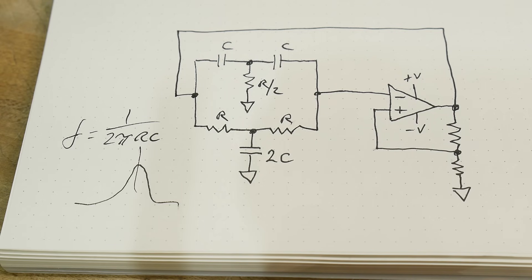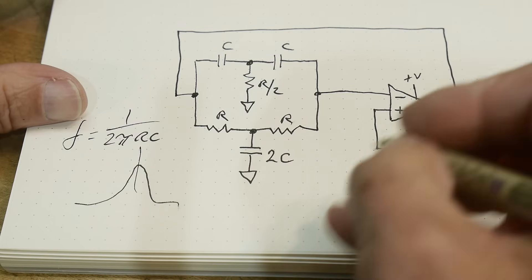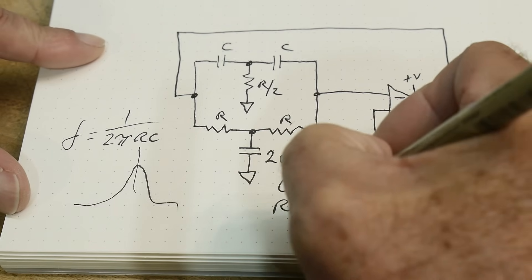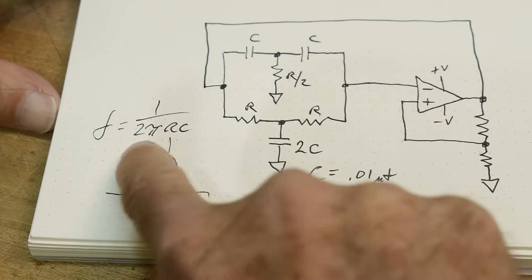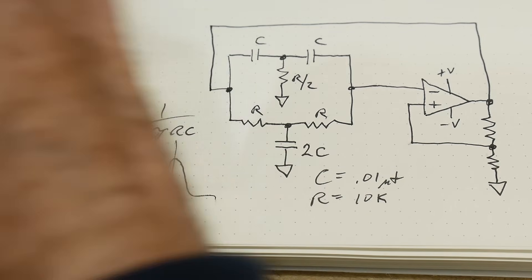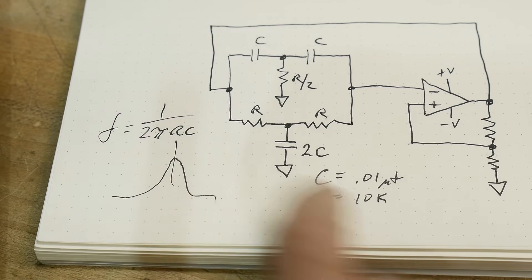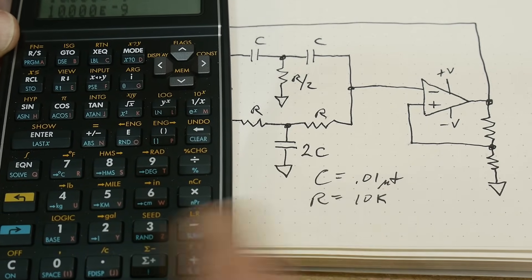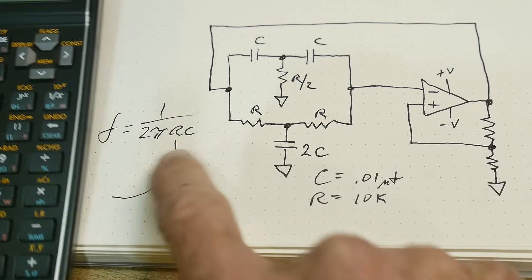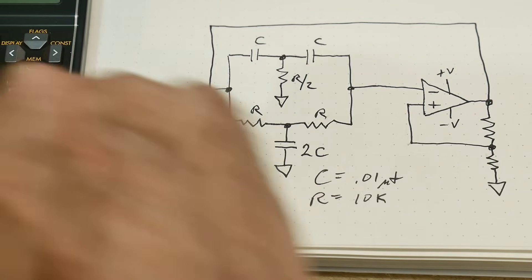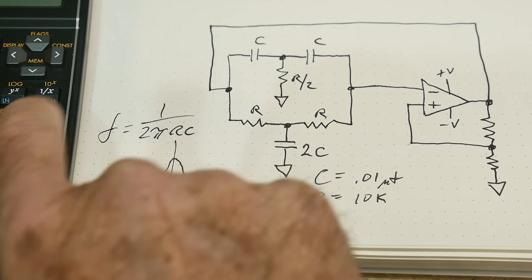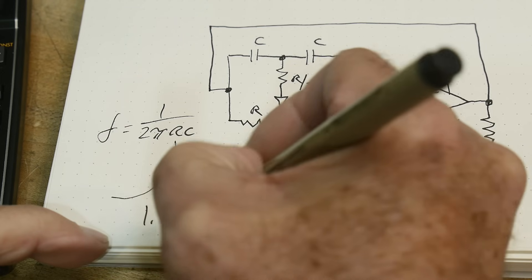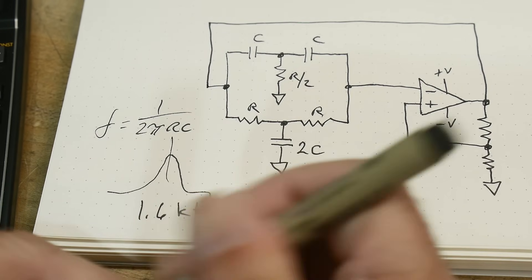All right, so what value should we use? We should use my favorite values. So C is going to be equal to 0.01 microfarads and R is going to be equal to 10k. Let's do the quick calculation here. Let me get out my calculator. So we have C, 0.01, e6 change sign. And we have 10k times pi times 2 times, and 1 over that. This thing should oscillate at 1.6 kilohertz.